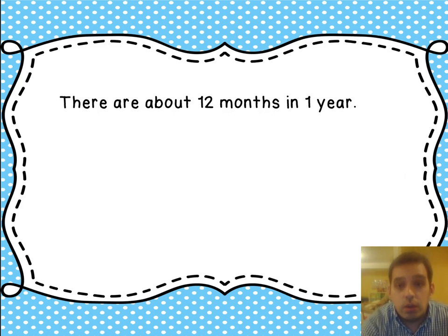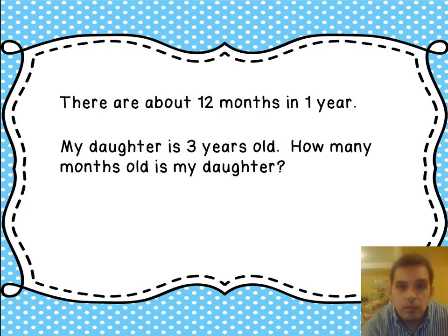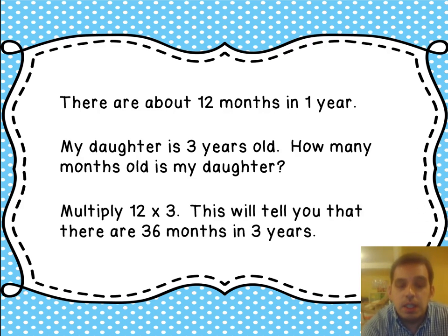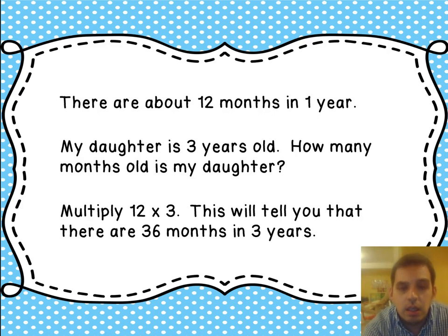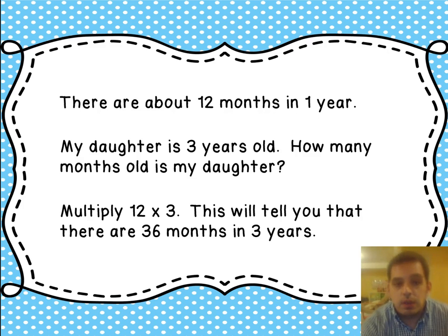There are 12 months in 1 year. My daughter is 3 years old. How many months old is my daughter? We need to take 12 and multiply it by 3 — 12 months in a year and 3 years in the question. That tells you there are 36 months in 3 years. So the answer is my daughter is 36 months old.